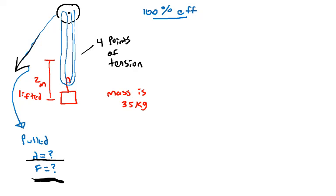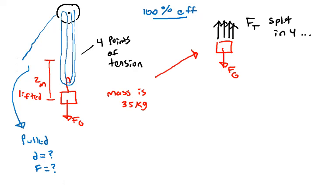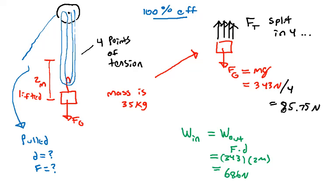And you can hit play when you're ready to check. All right, so for our free body diagram we have the force of tension split into four, so each force of tension would be only 85.75 newtons. We know that the work in equals the work out, so what we're getting out of this is 686 newtons—this is with no machine. Work in, we can figure out how far we would end up pulling—it's only going up two meters but we're pulling eight meters. So we can see that we're getting a mechanical advantage: the force is a lot less but we have to pull a greater distance.